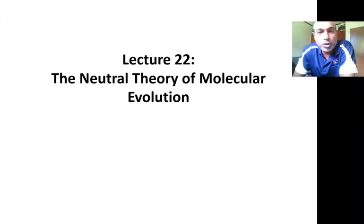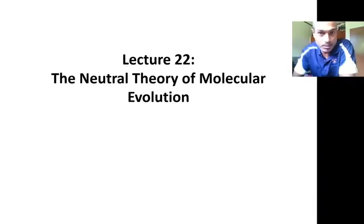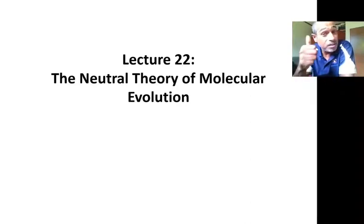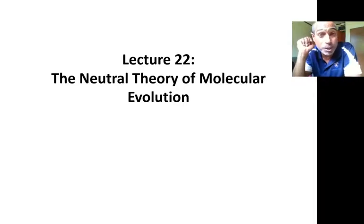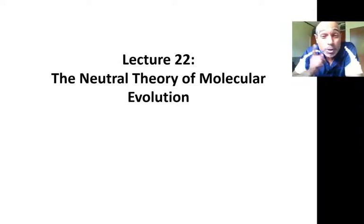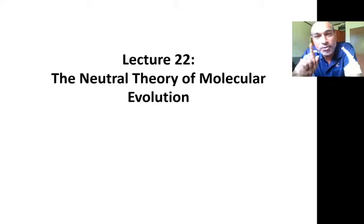Today we're going to conclude our section on population genetics, and I'm going to leave you with the third null model that has dominated our field. You're not unfamiliar with models now. We first discussed the Hardy-Weinberg model — our null model to show whether we have evolution or not. Then we came with the Wright-Fisher population model, which was supposed to help us figure out how much genetic drift is affecting allele frequencies.